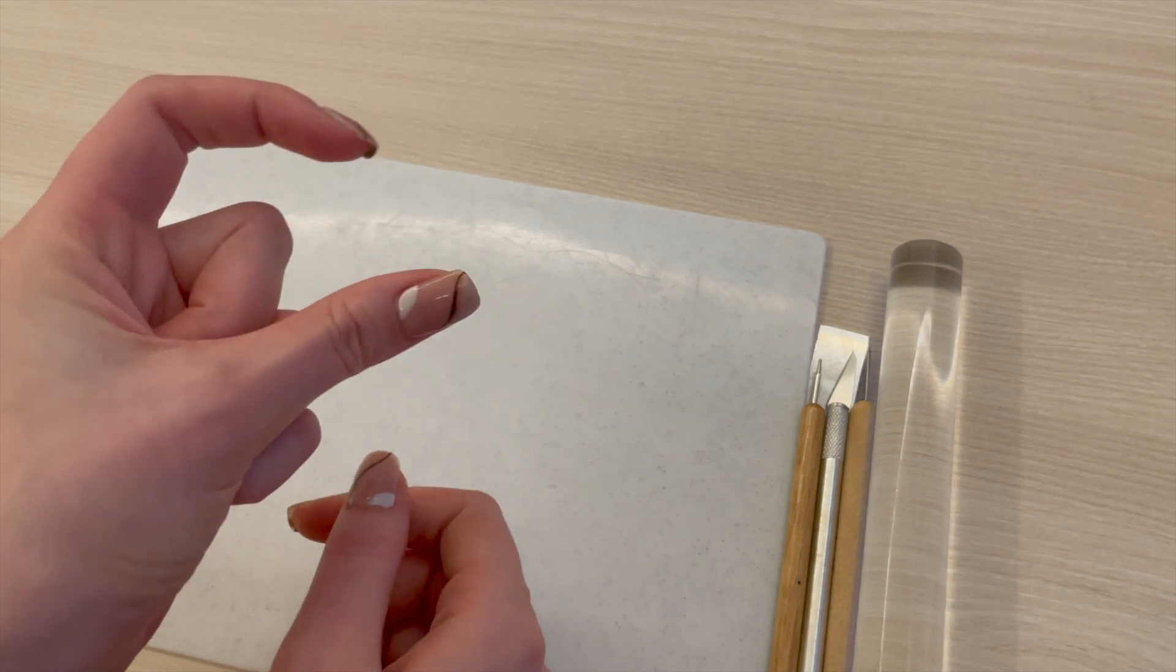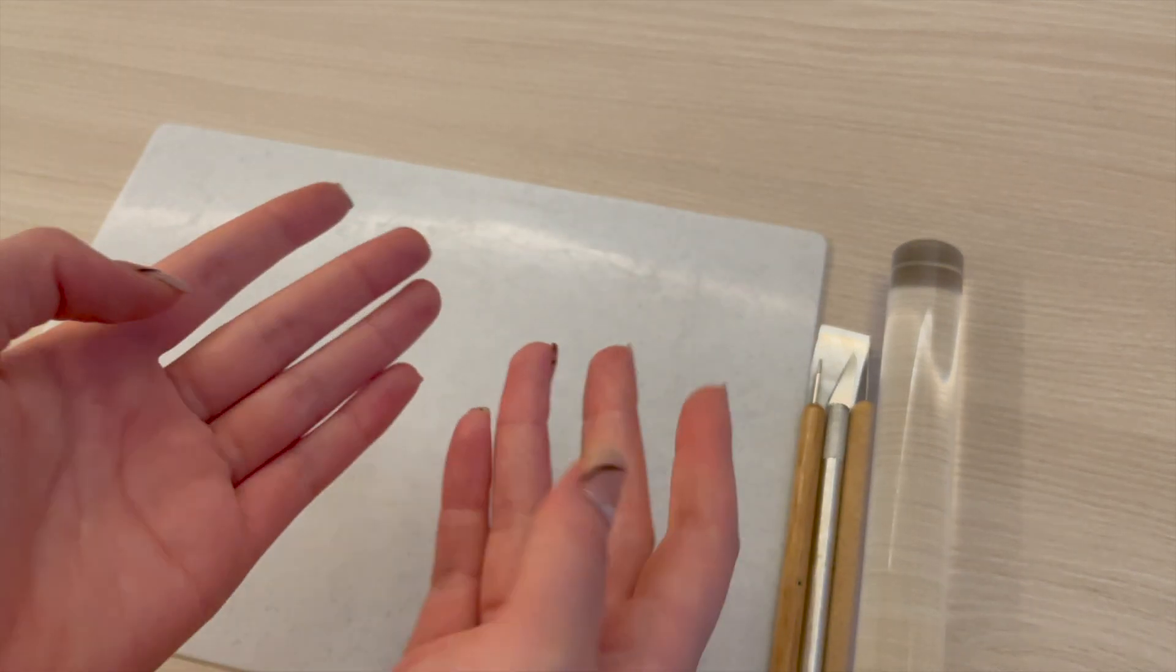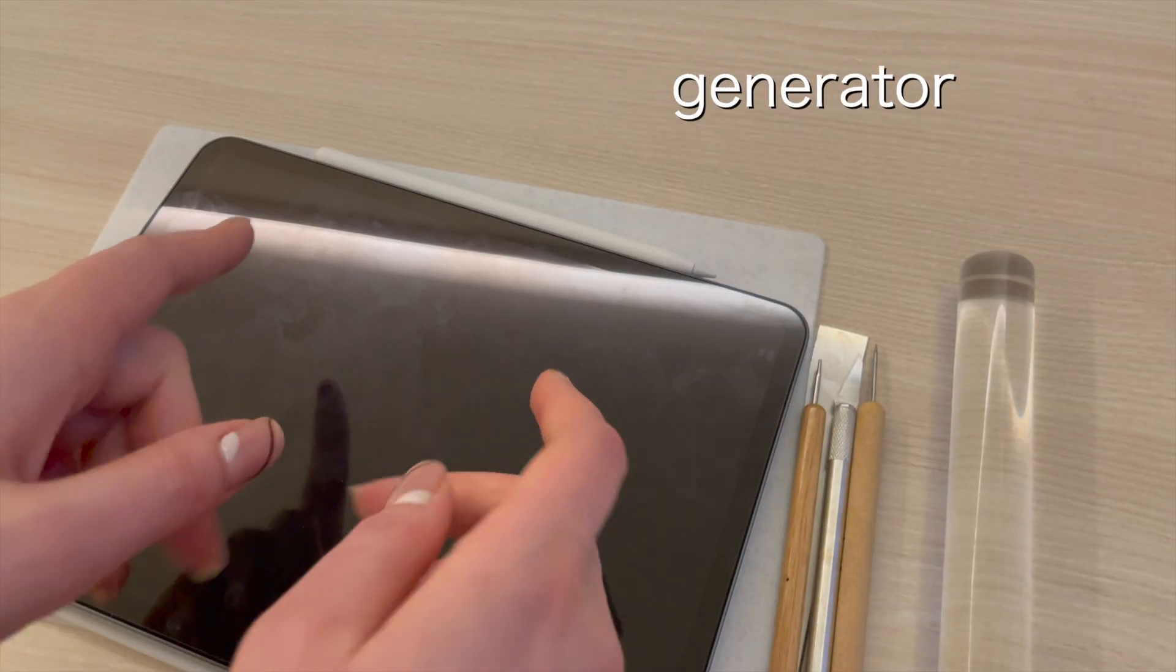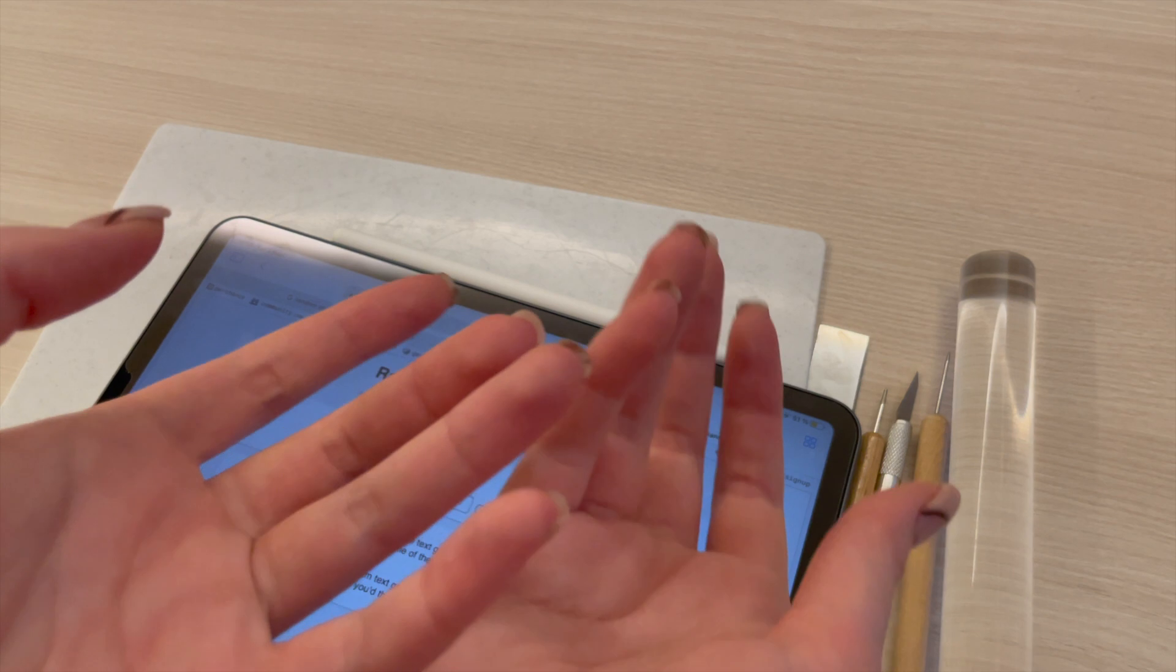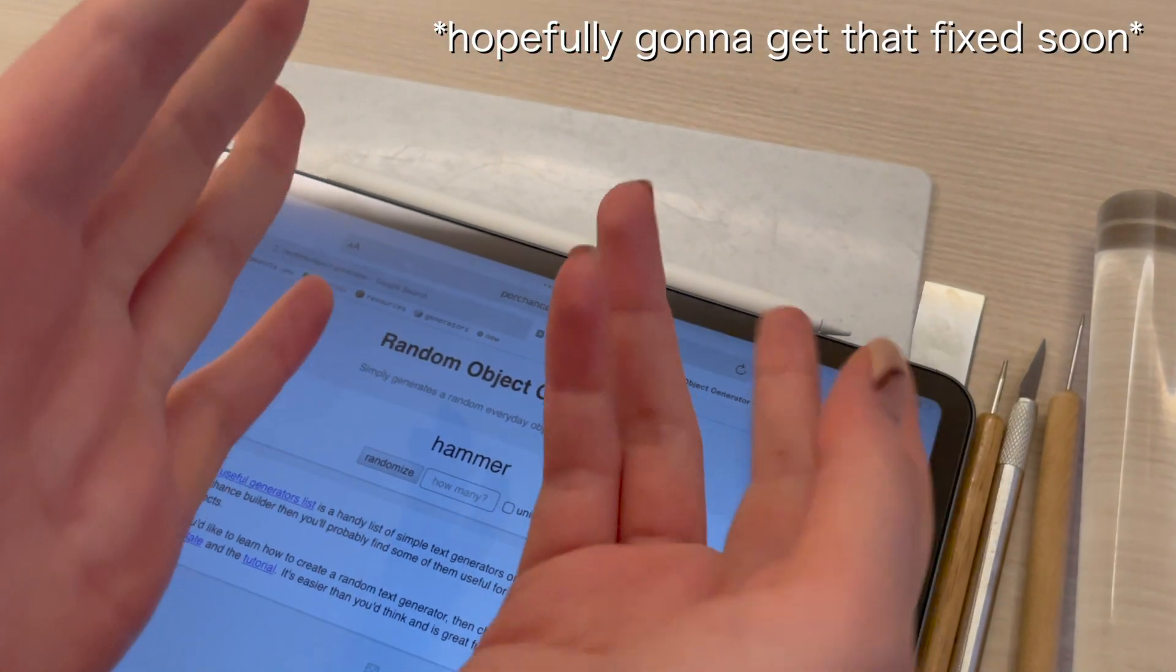So for this week's video I'm gonna be making small clay sculptures or charms, but instead of me deciding what I'm gonna be making, I'm gonna be using a random object generator. Also all the random focusing and stuff, I'm not doing that, that's my phone just having its own brain.